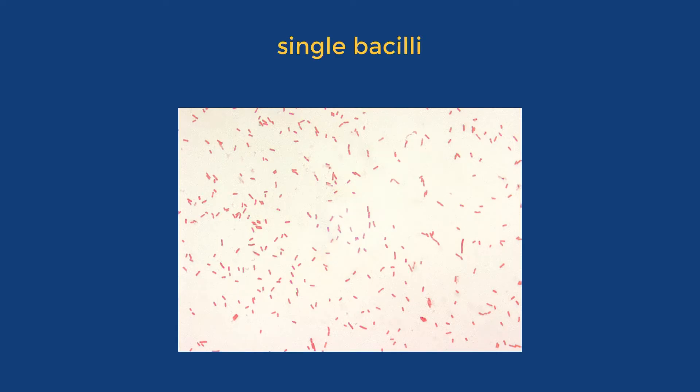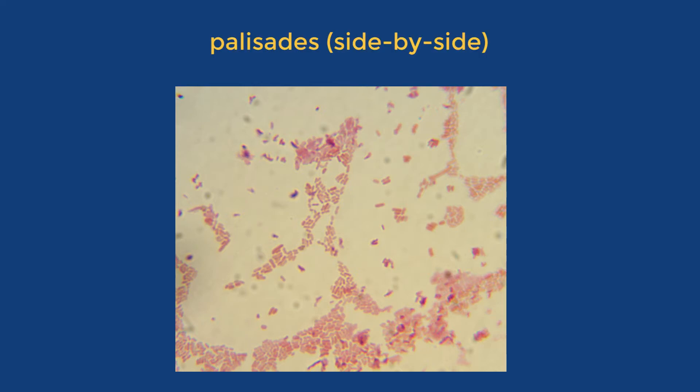Bacilli can sometimes be found as single bacilli, as diplobacilli in pairs, streptobacilli in chains, or in palisades stacked side by side. Bacilli do not form staphylo arrangements.